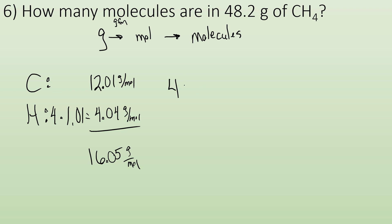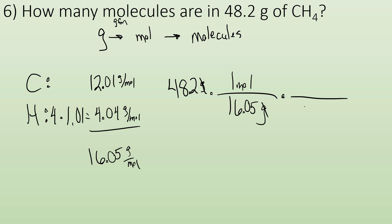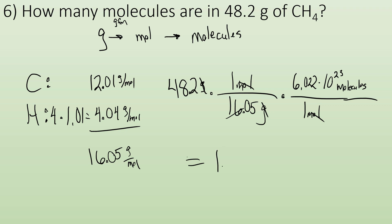Starting with 48.2 grams, I need to cancel grams, so I put 16.05 grams on the bottom and one mole on top. Now I plug in Avogadro's number: one mole on the bottom, 6.022×10²³ molecules on top. Moles cancel out, leaving molecules. Plugging and chugging gives 1.81×10²⁴ molecules — a whole lot of molecules.